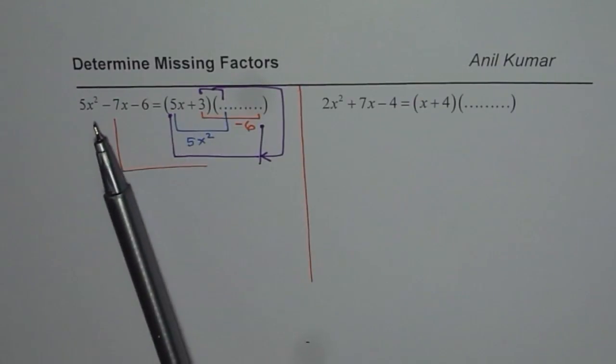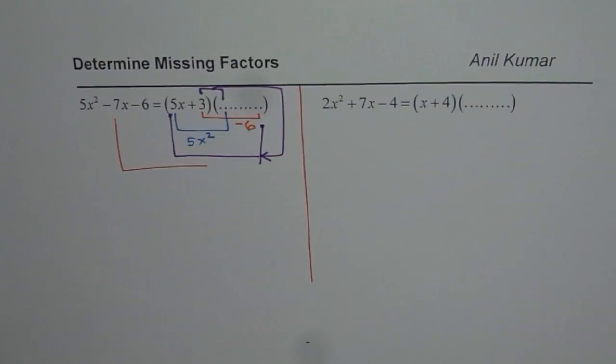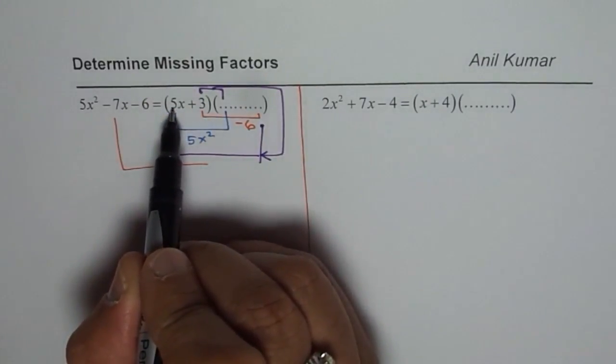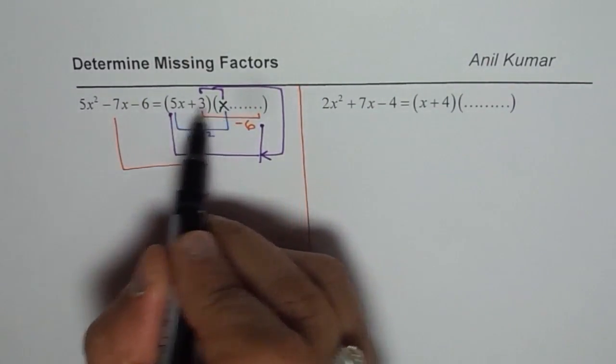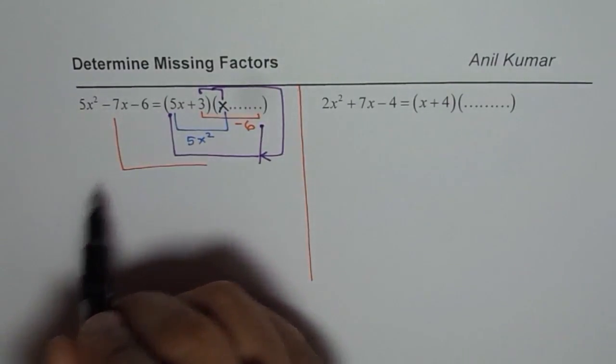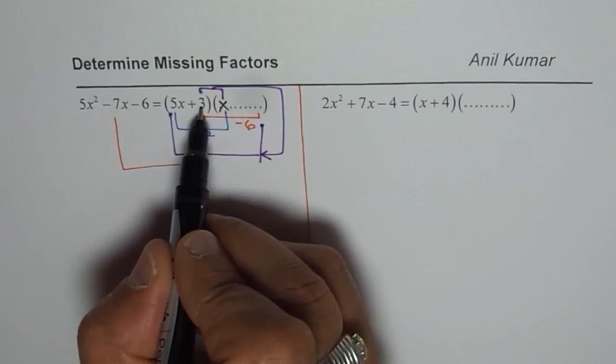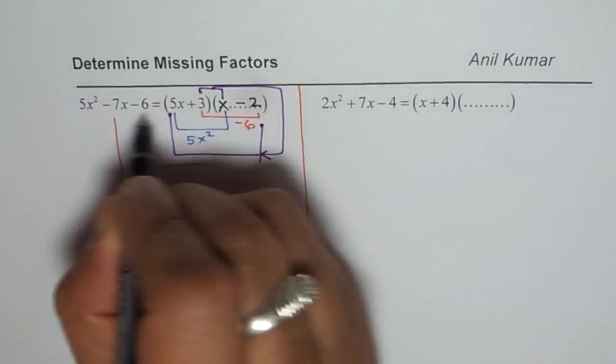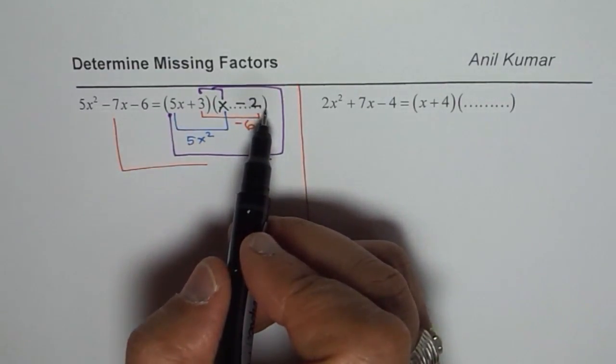Now let us use the strategy to find the answer. Now since we need 5x squared and we know this we can get only by multiplying by x. So if I multiply by x, I get 5x squared. Perfect. To get minus 6, we have 3 here. So minus 2, 3 times minus 2 will give you minus 6.